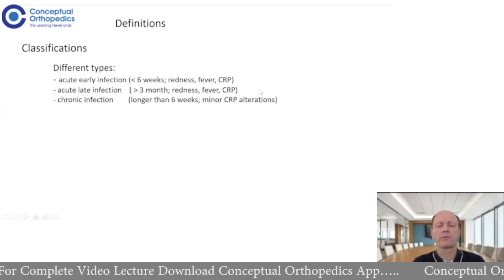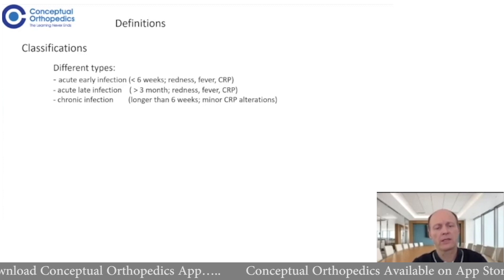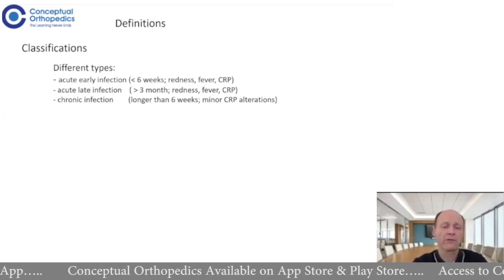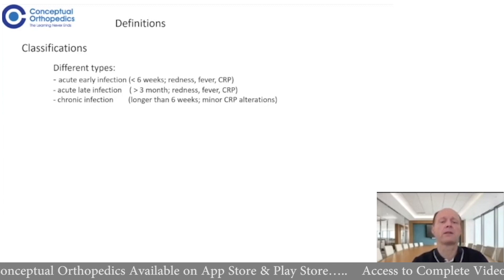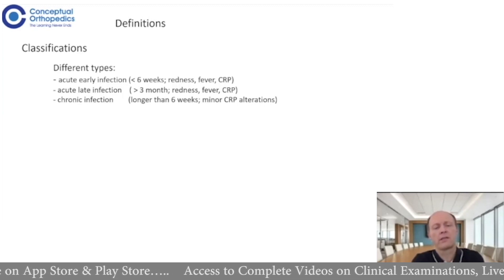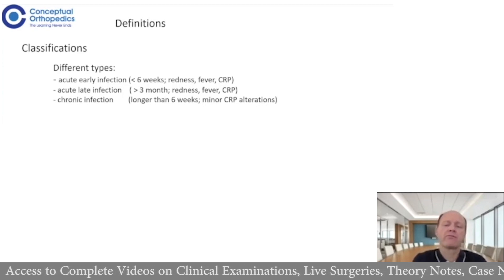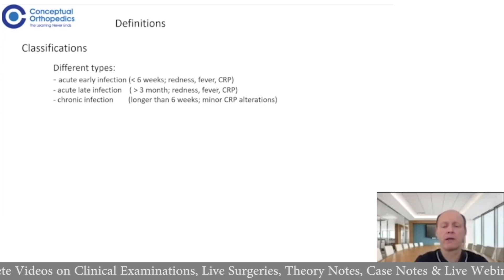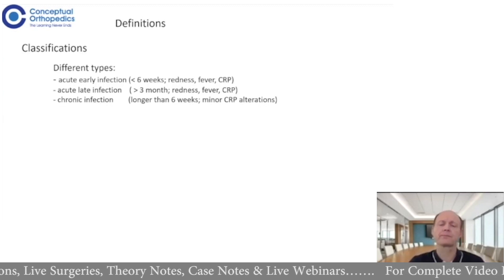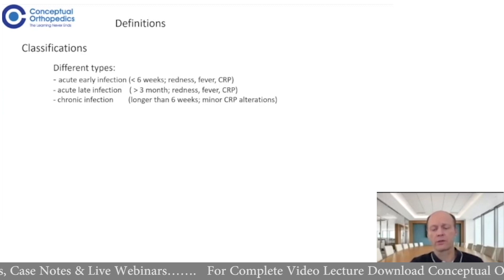The acute late infection is symptom-wise very similar, but it is defined as an acute infection occurring later than three months after the index surgery — it can occur after five or even ten years. Opposite to these two acute infections, we have chronic infection. After the six-week period, chronic infections only have minor lab alterations and minor symptoms; one key symptom is chronic persisting pain. These are harder to diagnose than the acute infections.